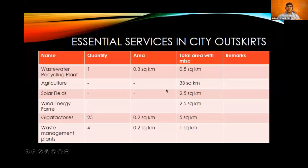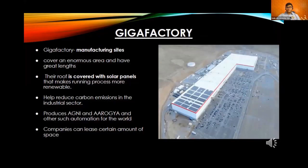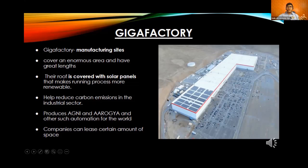Essential services at the city outskirts — energy, agriculture, waste management, and factories — were placed strategically so they don't harm citizens living inside the city. The gigafactories are large factories run by the state but the area can be leased by businesses so the state can earn revenue. Solar panels on top of these factories allow them to create energy for themselves, resulting in zero carbon footprint.